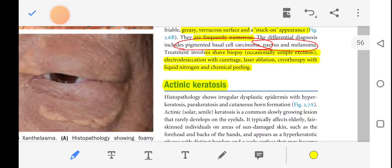Actinic keratosis shows irregular dysplastic epidermis. Dysplastic means that the whole tissue has changes which are not normal. So it has dysplastic epidermis with hyperkeratosis. Hyperkeratosis is when the keratin layer thickens. Parakeratosis and cutaneous horn formation.